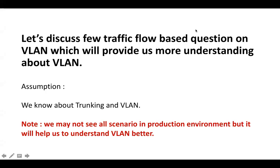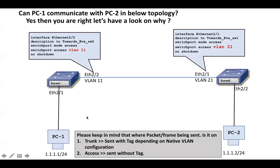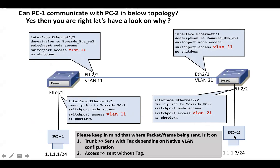Hello everyone, today we are going to discuss a few things about VLAN. Assuming we know about trunking and VLANs, let's start with the question: can PC1 communicate with PC2? If you answered yes, you are right. Let's look at the packet walk. Traffic originates from PC1. As soon as EVA Switch 1 receives that frame on Ethernet 2/1, it determines that traffic is for VLAN 11. It checks if it has any port in VLAN 11 — it has one port configured as an access port in VLAN 11 — so it will not insert a tag.